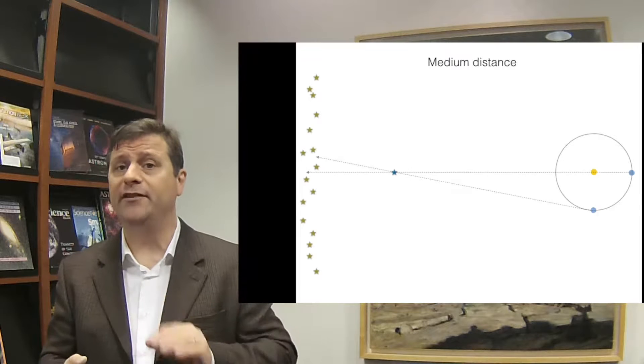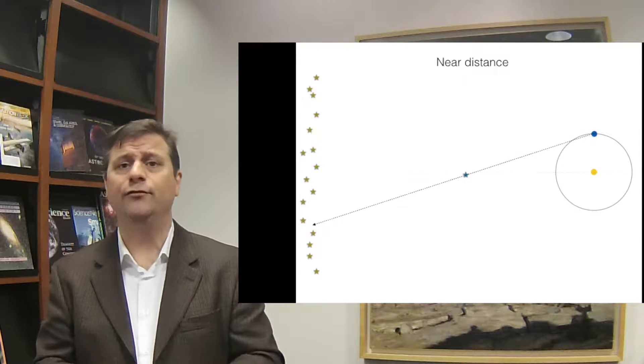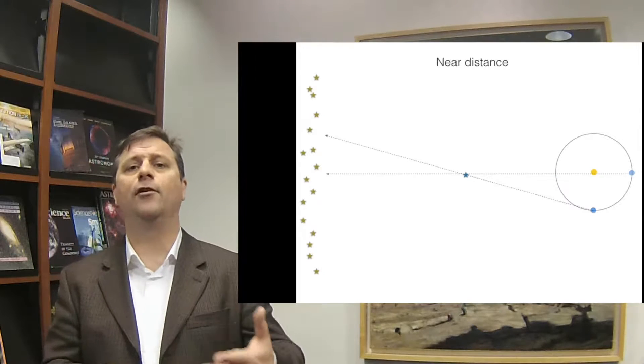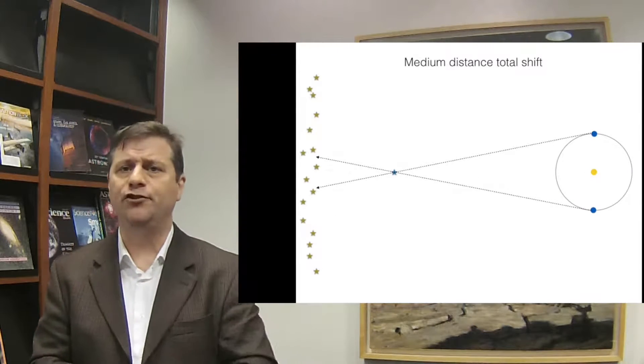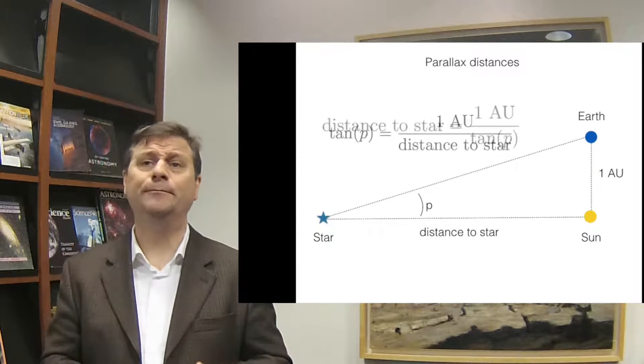The big bugaboo for everyone was parallax. If the Earth was moving around the Sun, there must be parallax. And even after Newton published his Principia, the laws of gravity, the laws of motion, the parallax still had not been observed. So it was an area of active research.